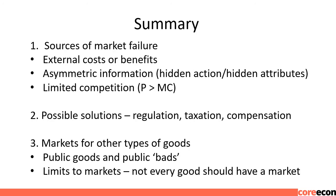Summary: (1) Sources of market failure — external costs or benefits, asymmetric information (hidden action, hidden attributes), and limited competition where price exceeds marginal cost. (2) Possible solutions — regulation, taxation, and compensation. (3) Markets for other types of goods — public goods and public bads. Limits to markets: not every good should have a market.